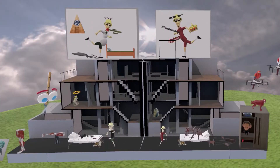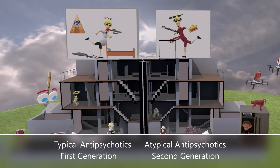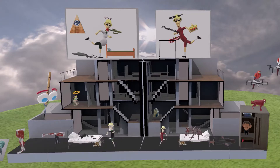Hey, welcome to our scene on the antipsychotics. In this scene, we're going to talk about the typical antipsychotics, also known as the first-generation antipsychotics, and the atypical antipsychotics, also known as second-generation antipsychotics. It is the atypical antipsychotics which are more often used now, and we'll explain why. But first, let's explain how we'll know that this scene is about antipsychotics at all.